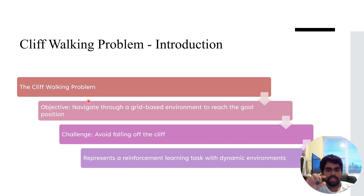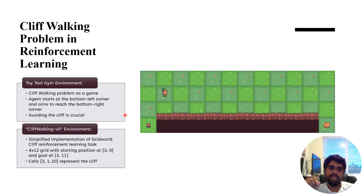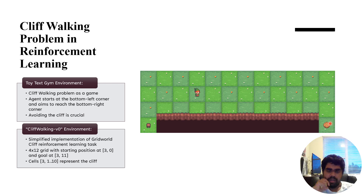We navigate through a grid-like environment of blocks of size 12 by 4, which represents the area. This is how the cliff walking game is represented. It is in the toy text gym environment — the cliff walking problem starts at the bottom left corner.